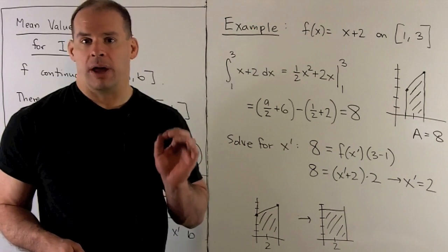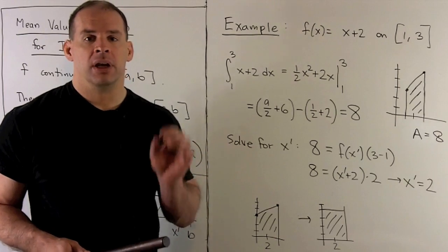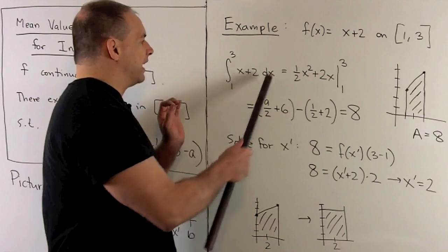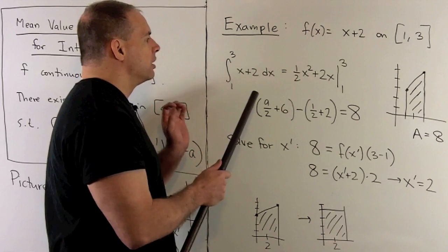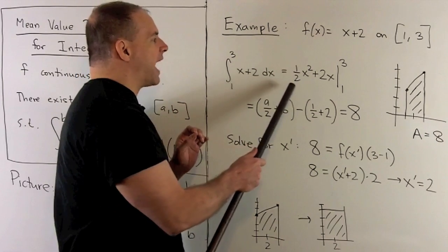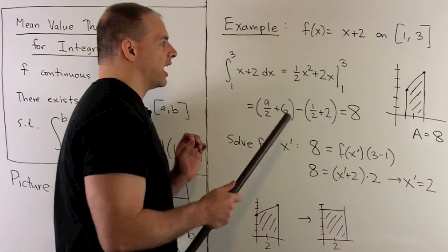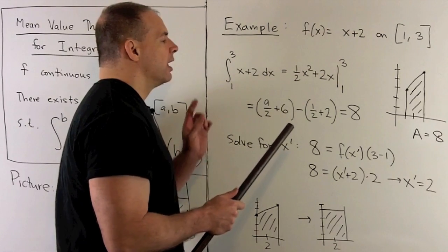Let's check that using the Fundamental Theorem of Calculus. So, we set up our definite integral. We need to find an antiderivative. So, we have x to the 1, so if I add 1 to the exponent, divide, we get a half x squared. Then, for the 2, we just attach an x.